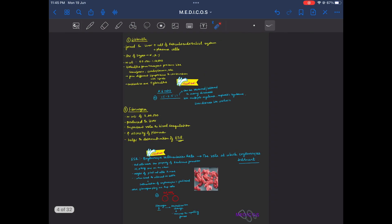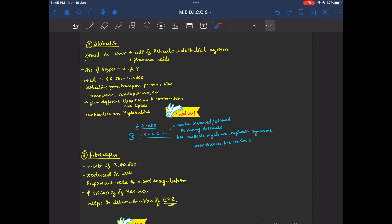The next thing is globulin. Globulin is also formed in liver. Mainly, plasma proteins are formed in liver. Globulin is also formed in cells of reticuloendothelial system like macrophages, monocytes and in plasma cells.